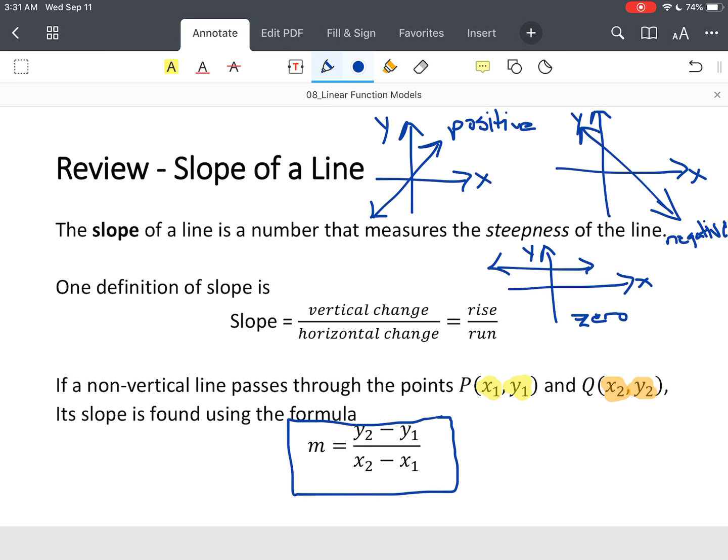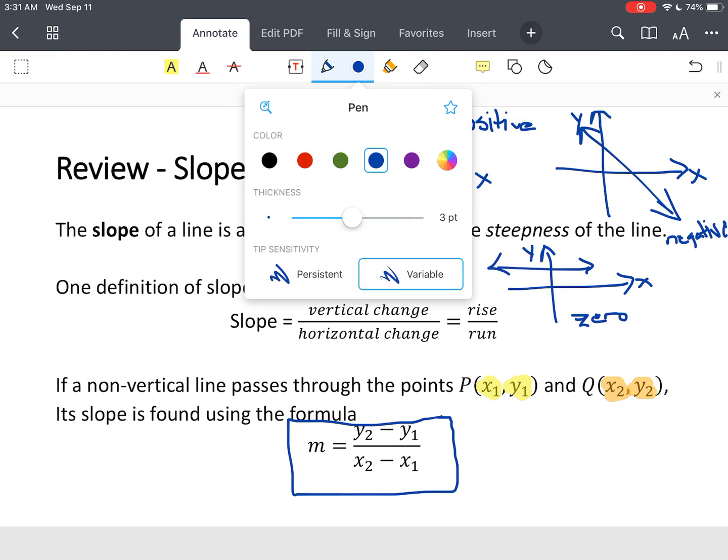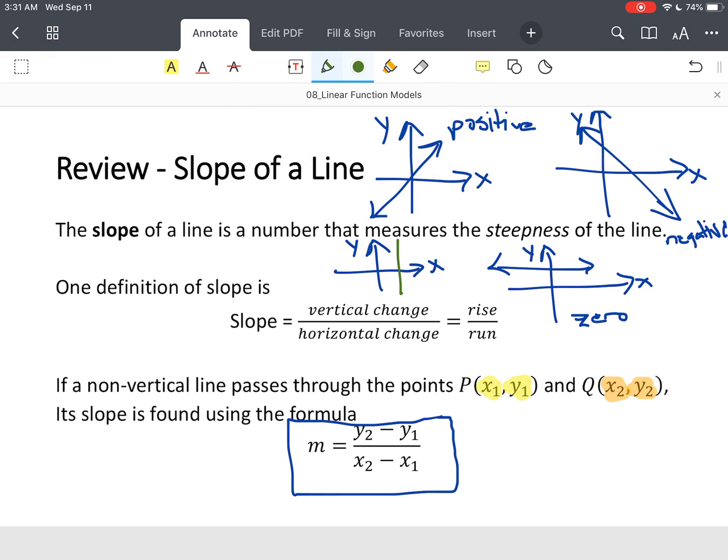And then, now some people will say this is slope defined, but then you have slopes that aren't defined. So let's say you had a line that was vertical, right? And then this line was vertical. Typically, we'll say that slope is undefined.